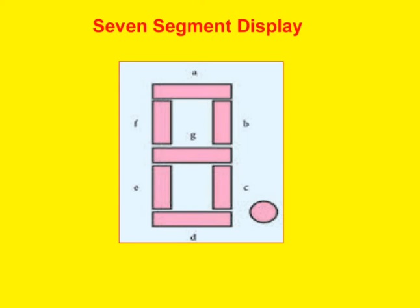The seven-segment display is used in digital meters, digital clocks, microwave ovens, etc. The seven LEDs are named A, B, C, D, E, F, and G. Together with an eighth LED used to display a dot, eight LEDs are used to display a digit.